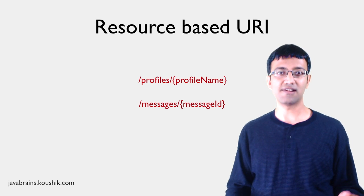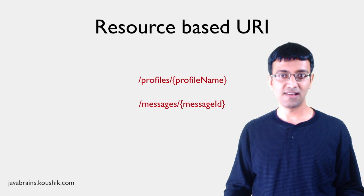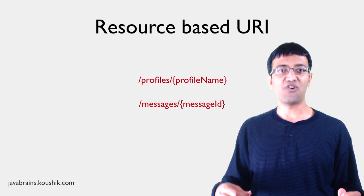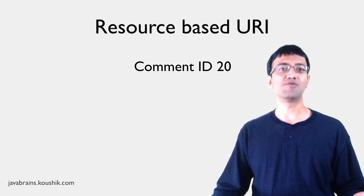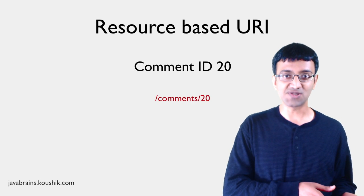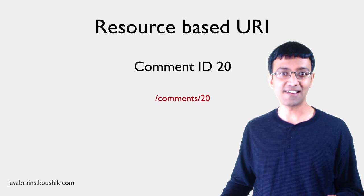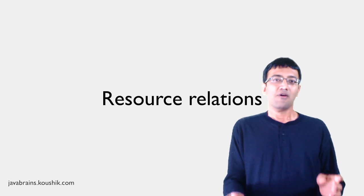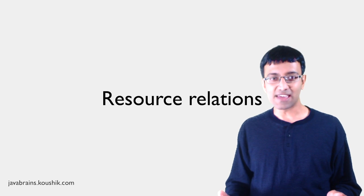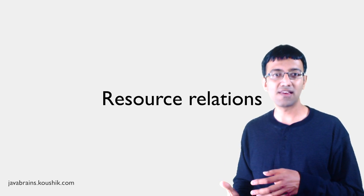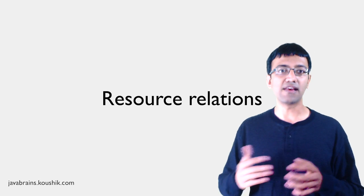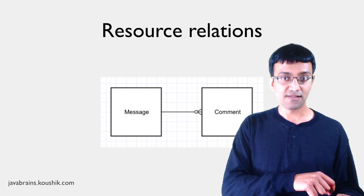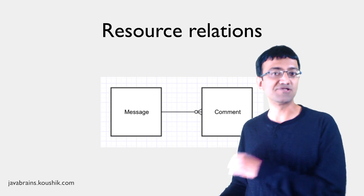Now let's look at some of the nouns in our Messenger application. There are comments, likes, and shares — each one can be a resource. What would be a good RESTful URI for a comment with ID 20? It could be slash comments slash 20. But there is one more thing we can do, and this has got to do with resource relations. When designing a URI for resources, you'll often encounter resources that are dependent on other resources. Take the example of messages and comments: someone posts a message and then someone else comments on it. A message can have multiple comments, each with its own ID — so it's a one-to-many relationship.